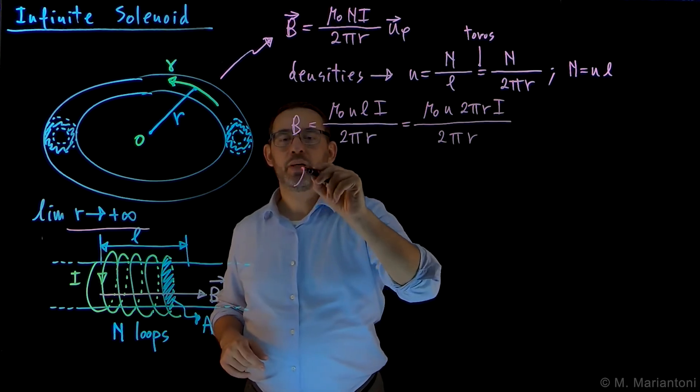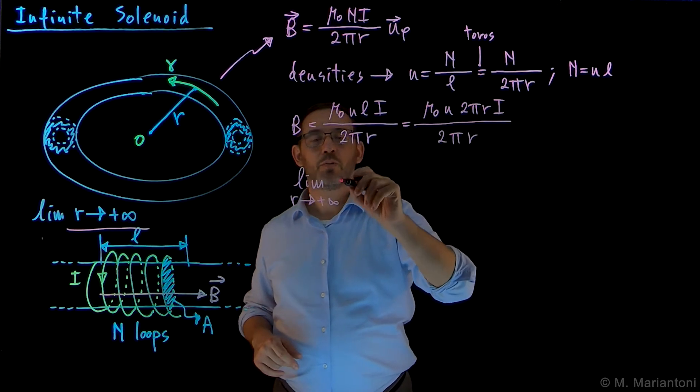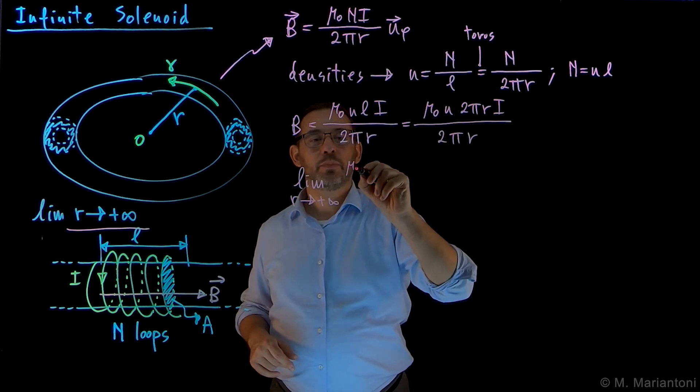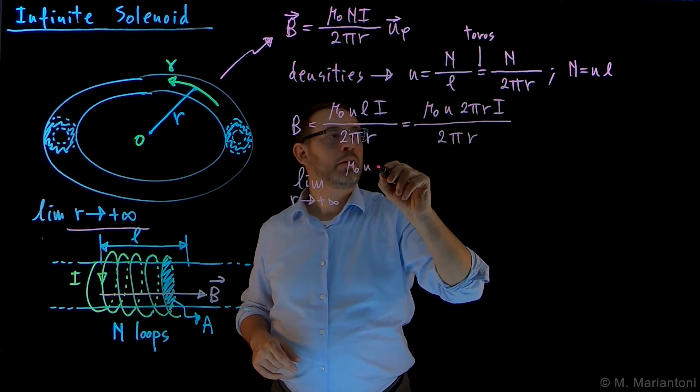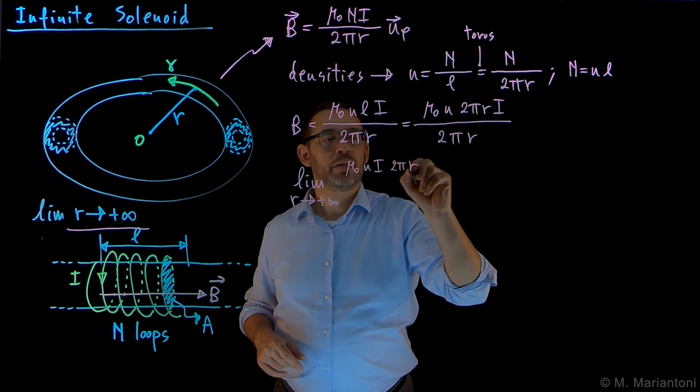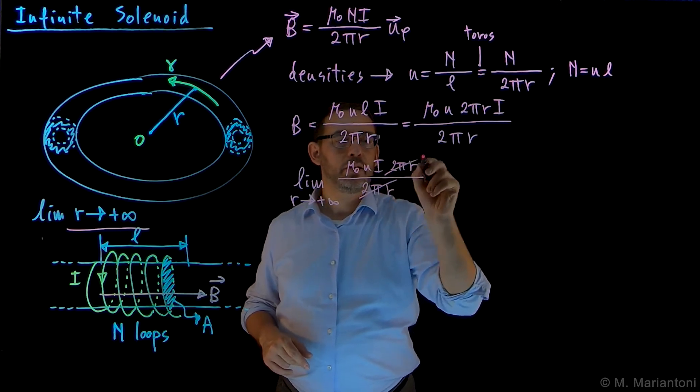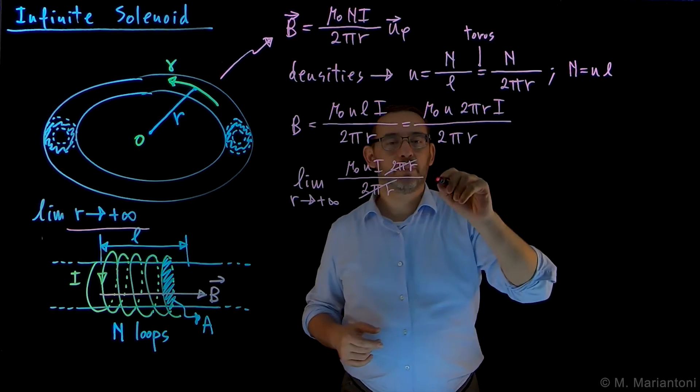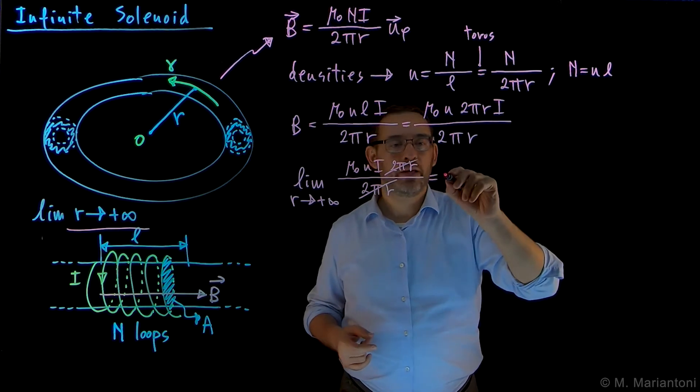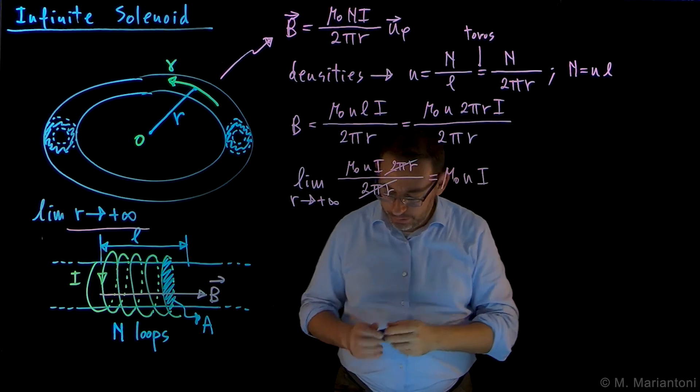Now we go in the limit for r that goes to plus infinity of this quantity. The limit simplifies quite a bit, because we have 2 pi r divided by 2 pi r, so in the Cauchy principal value meaning, in the interpretation of this limit, this 2 pi r cancels, and so we simply get mu_0 small n capital I. So this is the magnetic field.